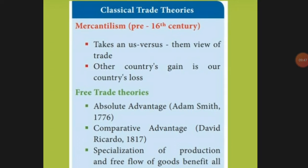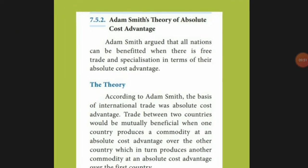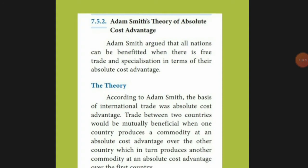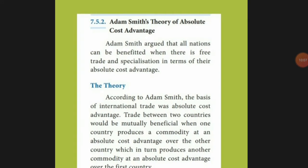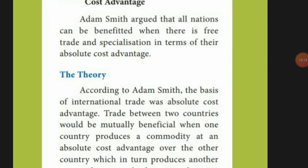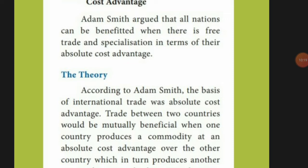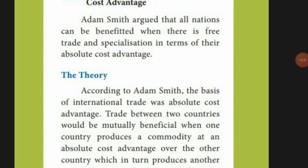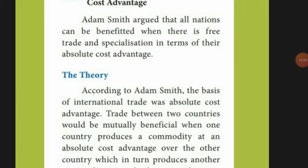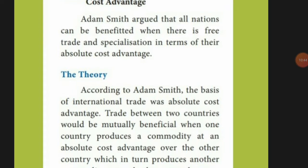Now we go to Adam Smith's theory of absolute cost advantage. According to him, if goods and services are transferred freely, both countries will have equal benefit. The theory explains: first, trade between two countries will be mutually beneficial. If one country is a specialist in one commodity, it can sell to the other country, and the other country — specialist in a different commodity — can sell back. Assumptions include: two countries in the model; only labor is used to produce any commodity.